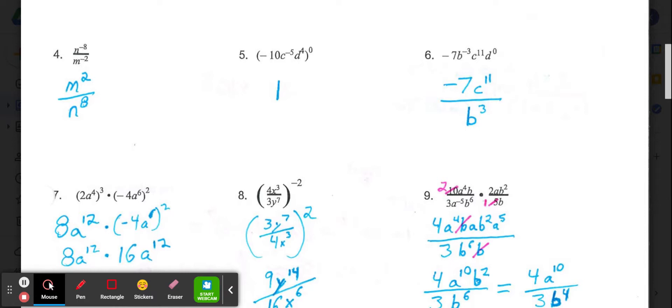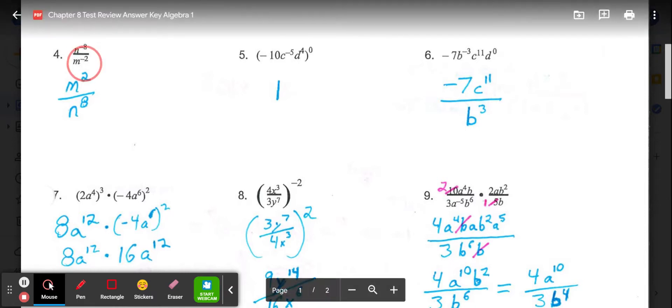Moving down to number 4, we have n to the negative 8th over m to the negative 2. If something's to the negative power to make it positive, we need to put it on the opposite side of the fraction. So the n to the negative 8th moves to the bottom and just becomes n to the 8th. M to the negative 2 moves to the top and is m squared. So we'd have m squared over n to the 8th.